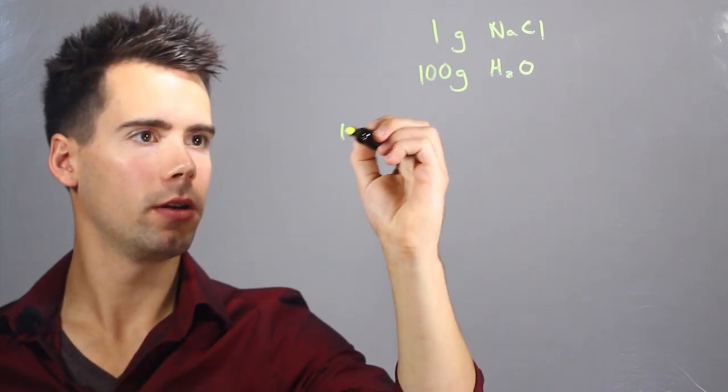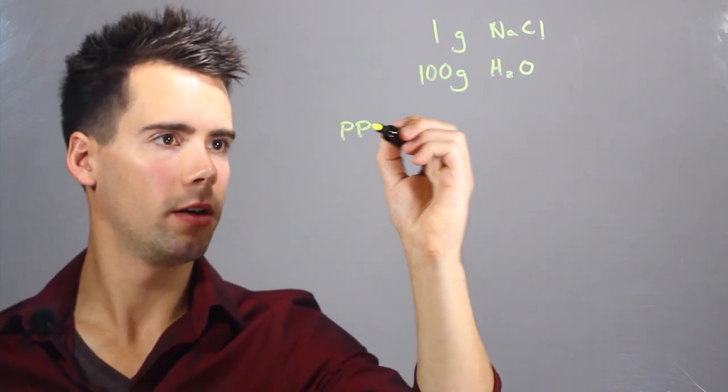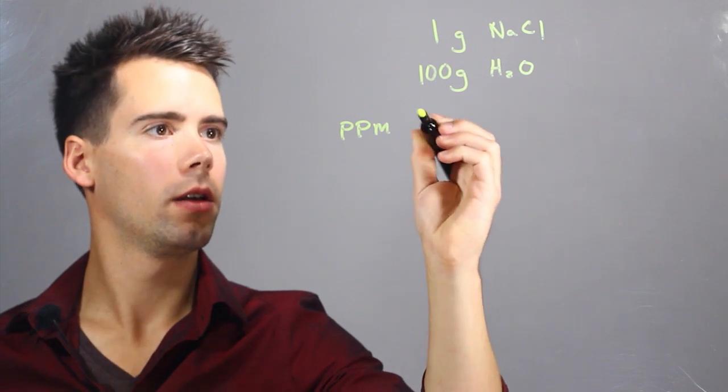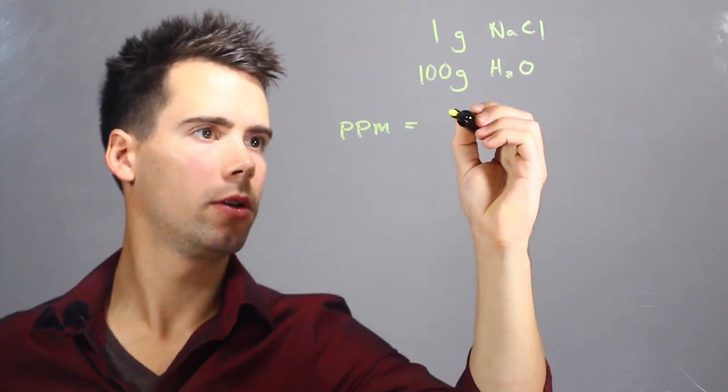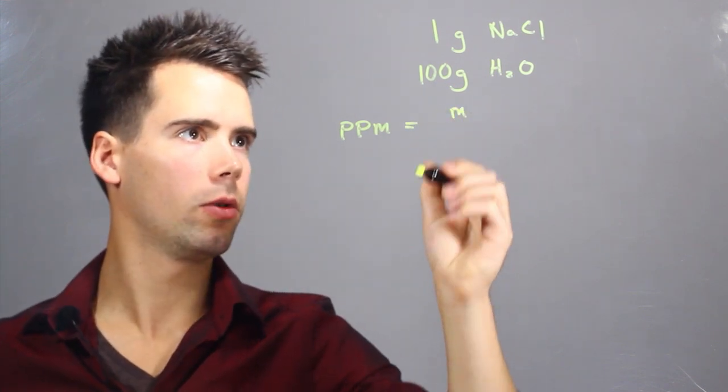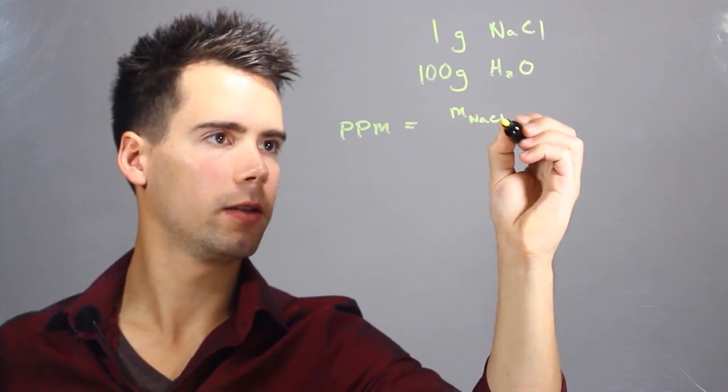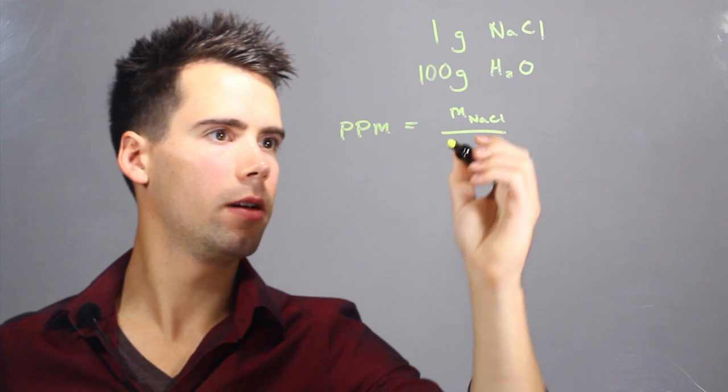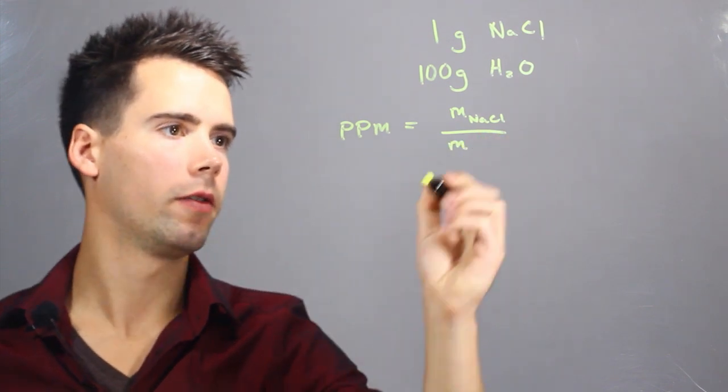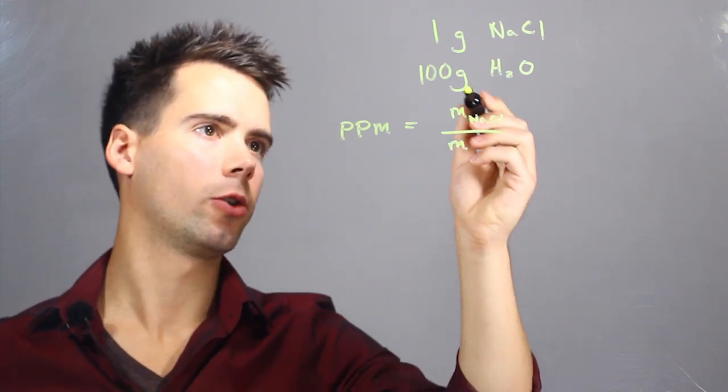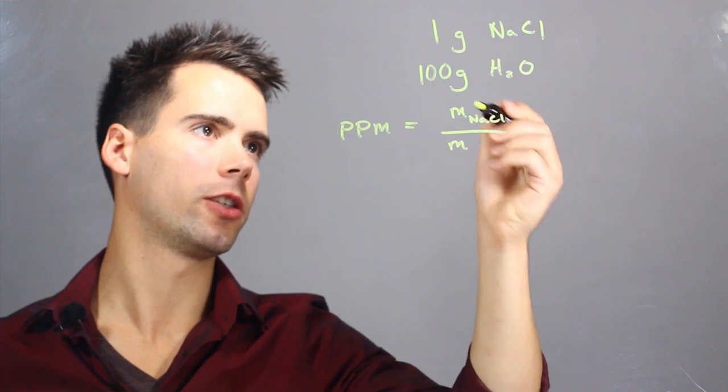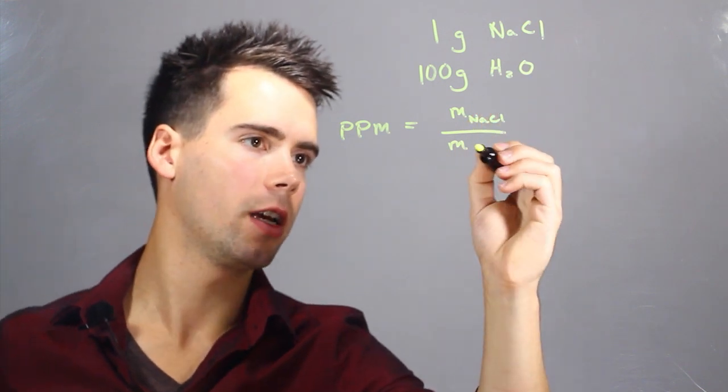We can use an equation, parts per million equation, and it's equal to the mass of the solute, which is sodium chloride, so mass of NaCl, divided by the mass of the solution, which is the total mass. So it's 100 grams of H2O plus one gram of NaCl.